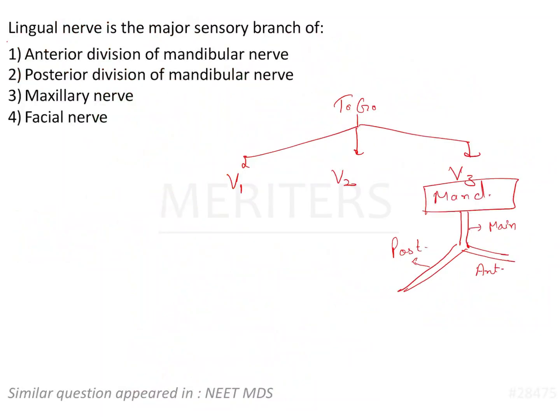So yes, the lingual nerve is the major sensory branch of the posterior division of the mandibular nerve, as we have already discussed. So the answer is option two — that is the posterior division of the mandibular nerve, which gives a branch called the lingual nerve. Thank you.